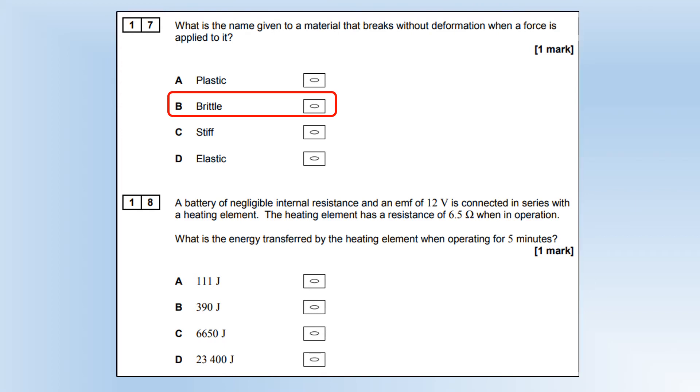A battery of negligible internal resistance and an EMF of 12 is connected in series with a heating element. The heating element has a resistance of 6.5 ohms when in operation. What is the energy transferred by the heating element when operating for 5 minutes? We're going to use P equals V squared over R to find the power. Power times time is energy, so put all those values in, gives us option C.